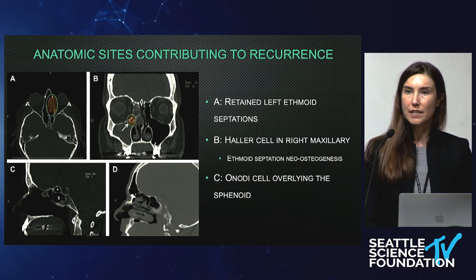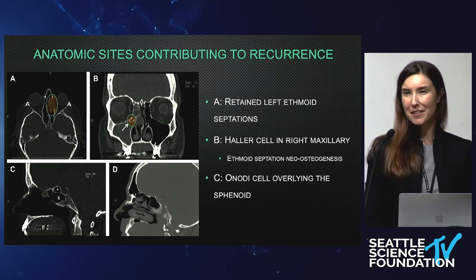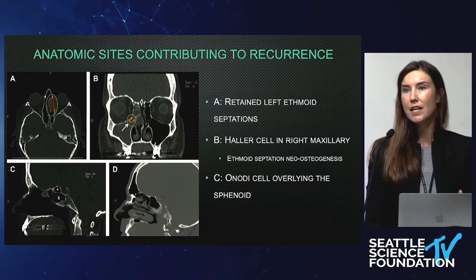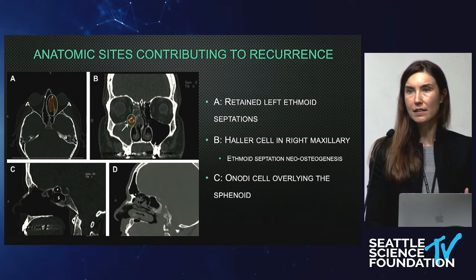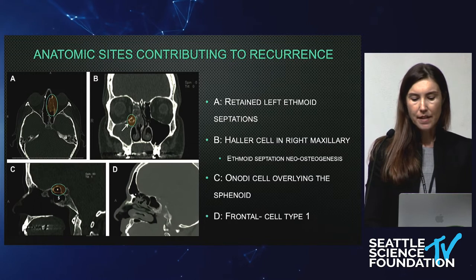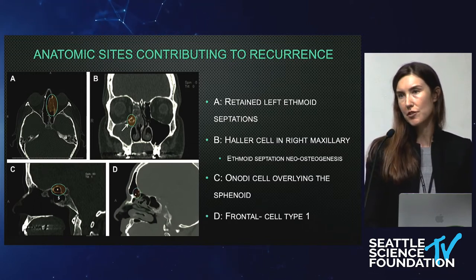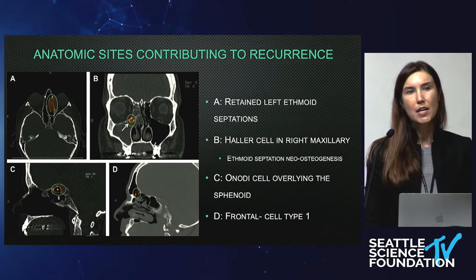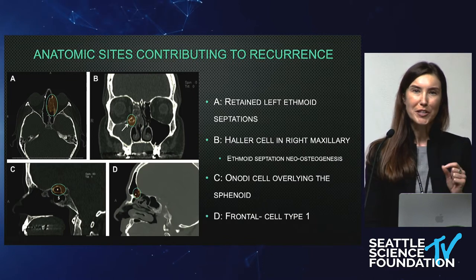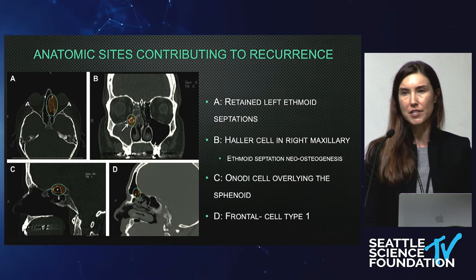The Onodi cells that overlie the sphenoid — sometimes you'll see one opened but not the other, so you want to be paying attention to this. Also, the pneumatization in those areas with the carotid and the clinoid can be different if you have Onodi cells present. And then the frontal cells — here I'm showing a type 1, but there are different pneumatizations for the frontal and the different frontal cells. You want to be aware of those and plan ahead, because you want to make sure you're going to address each of them. When you only open into that little type 1 cell and haven't opened the full sinus, you really haven't done that patient justice.